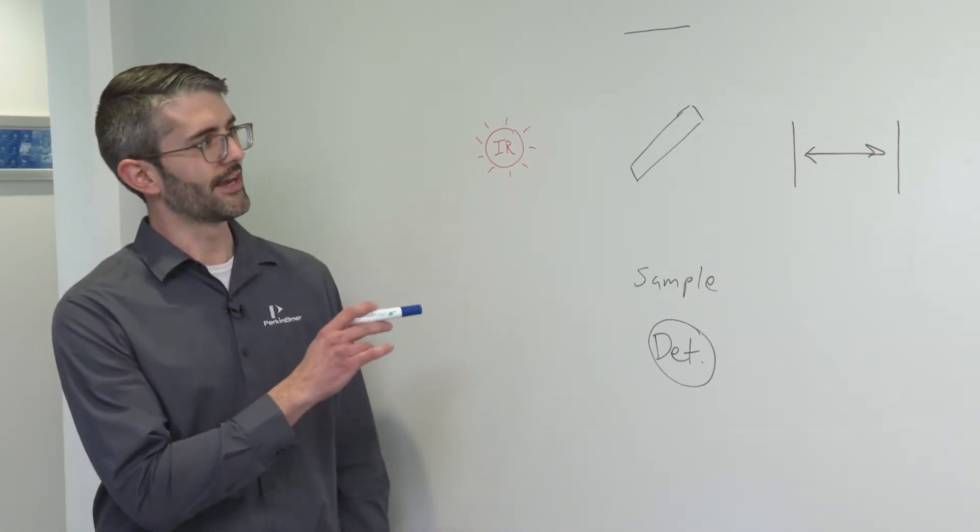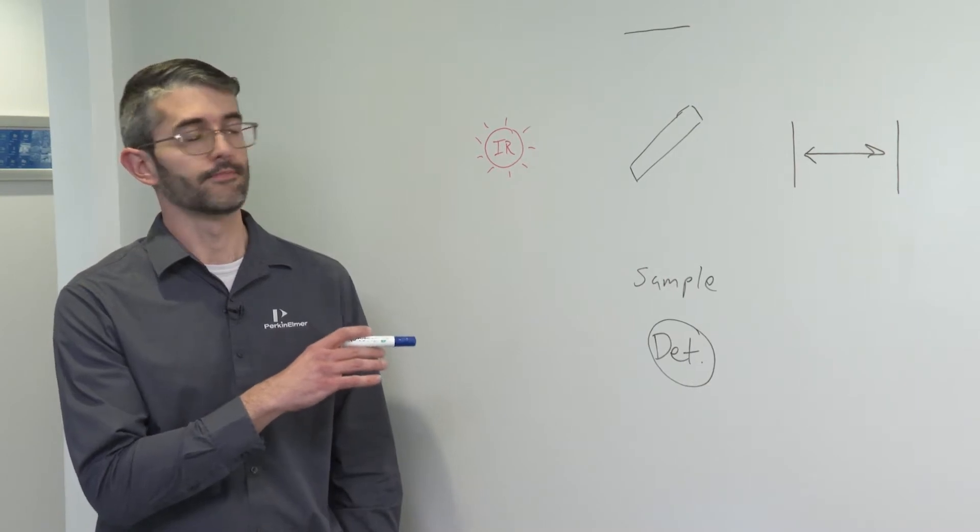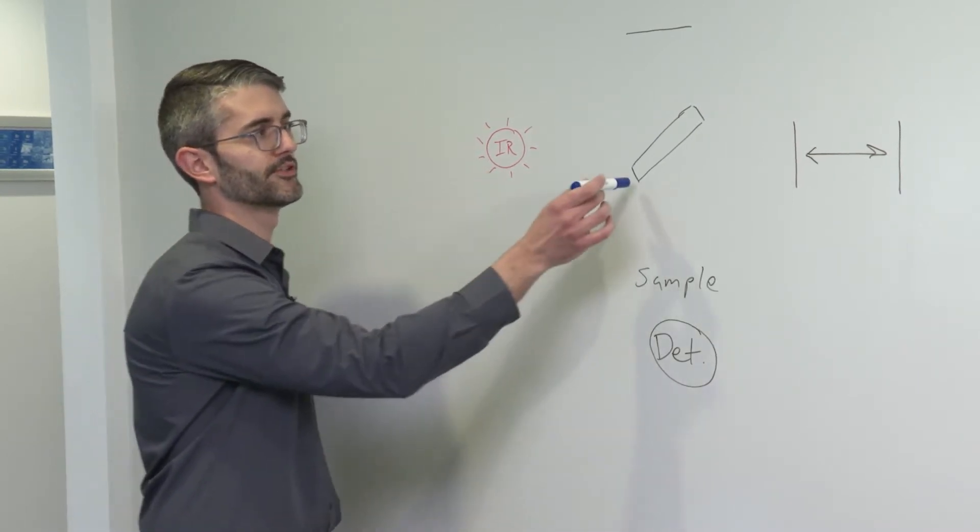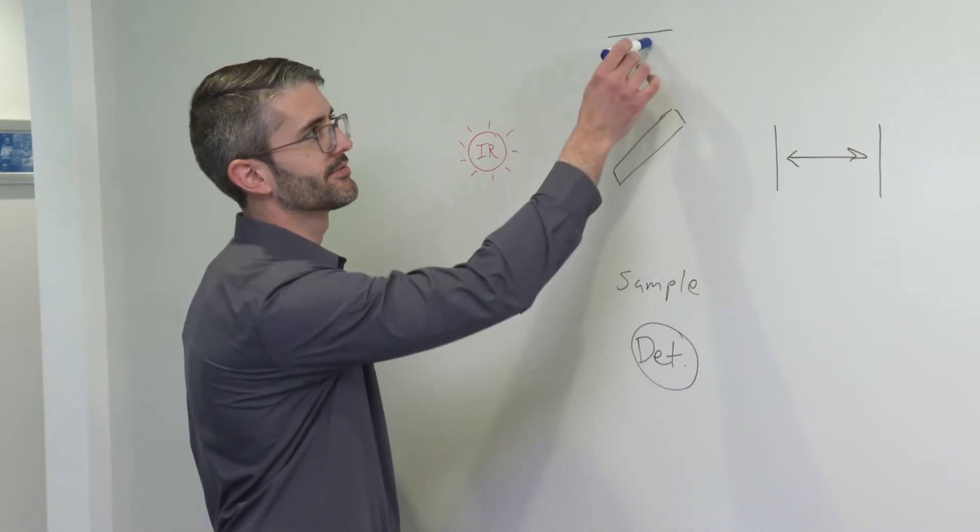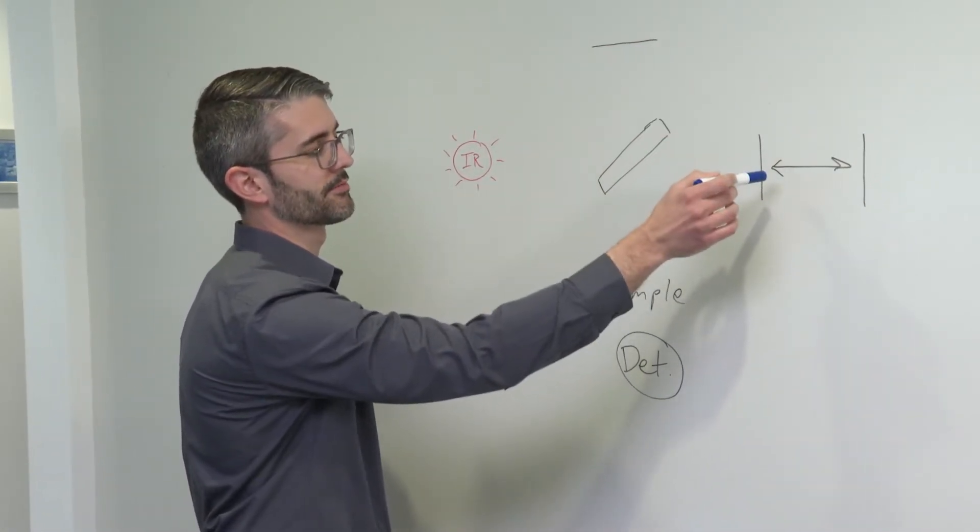In the traditional FTIR interferometer, there is an infrared source, a beam splitter, a fixed mirror, and a moving mirror.